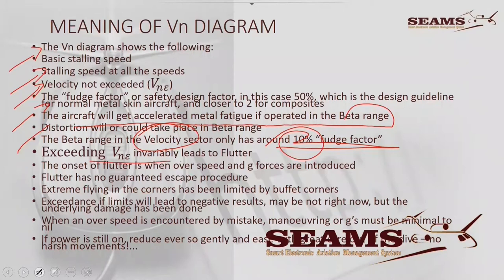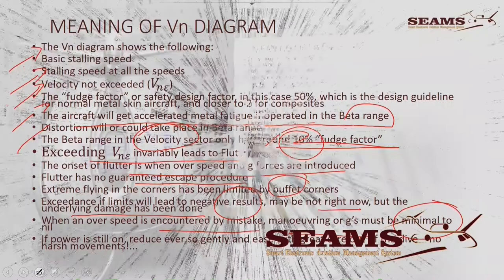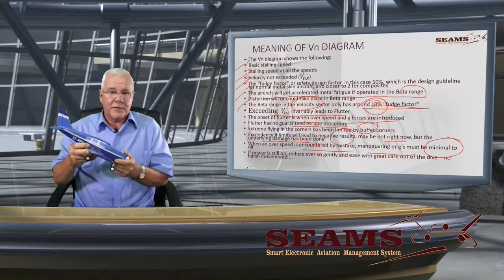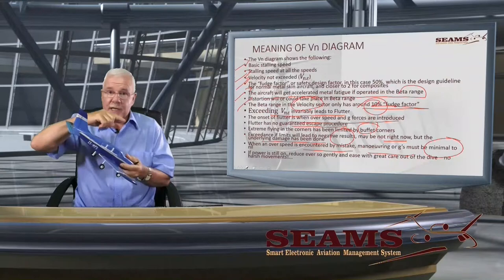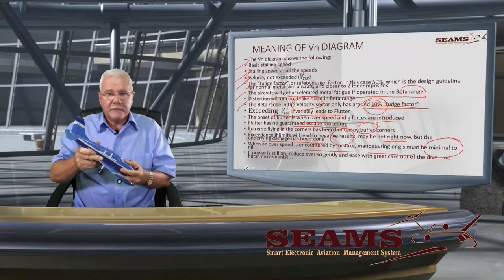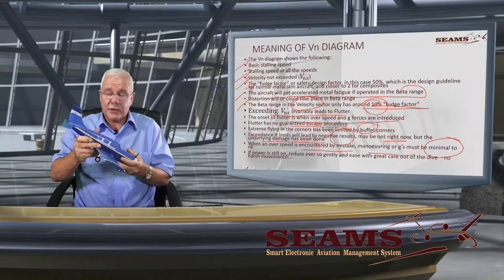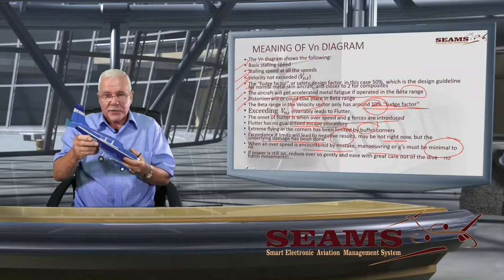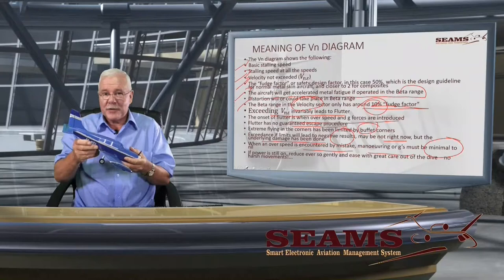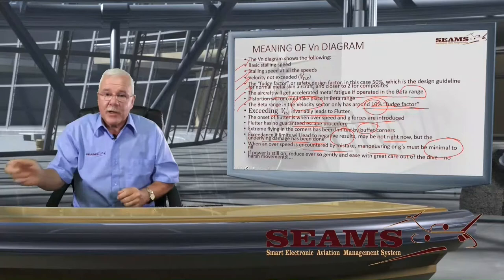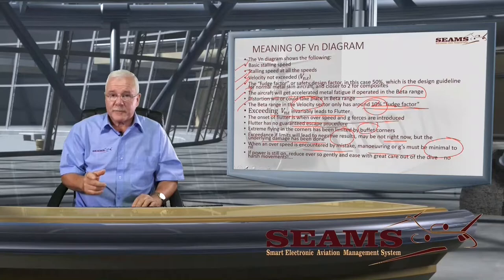Flutter leads to breakup and there is no guaranteed escape procedure for flutter. Exceeding the speed limit will have negative results — maybe not right now, but underlying damage has been done. When an overspeed is encountered by mistake, maneuvering G must be minimal to nil. If you're diving in one of these slick aircraft today and you suddenly realize you've already passed the VNE, don't pull, don't get a fright, don't do anything. Very, very gently close the throttle ever so slowly, and ever so slowly catch that nose so there is no harsh movement. Any harsh maneuvering and the onset of flutter is probably guaranteed once you're over there.